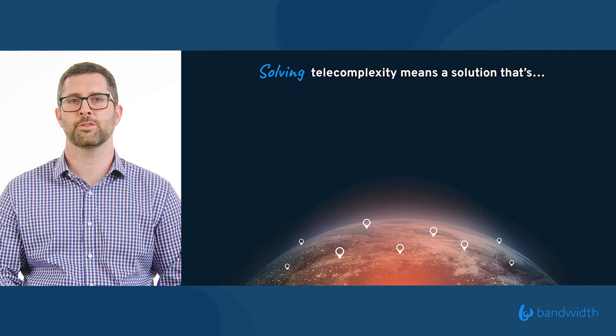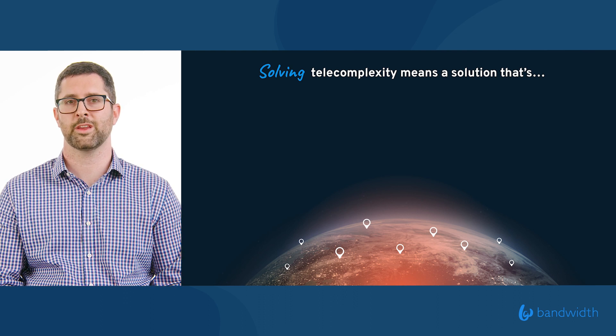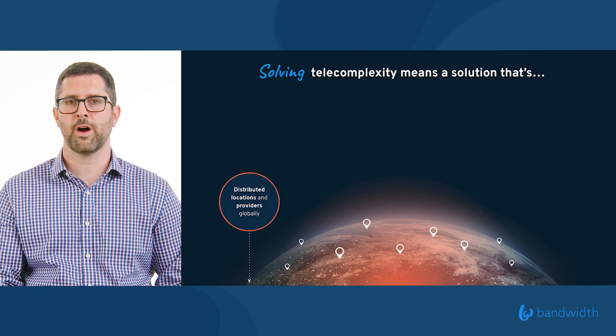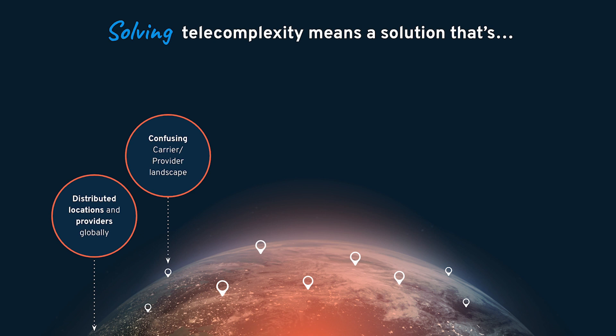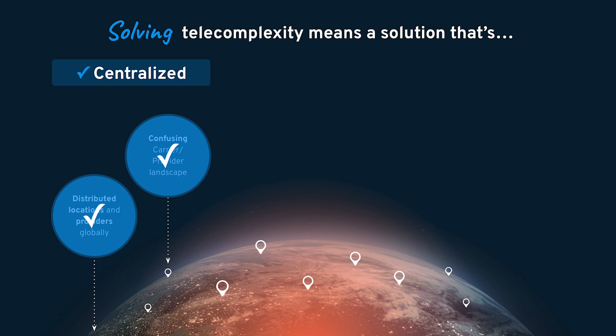Solving telecomplexity means finding a solution that helps you overcome the challenges of dealing with distributed locations, different providers, and a confusing carrier and provider landscape across the world. For example, if you have a contact center with multiple locations — one in the UK, one in the US, one somewhere else — you're likely dealing with different carrier vendors, different SLAs, different contracts, different terms, and different support. It can get really complex fast. We'd recommend looking for a solution that centralizes those carriers into a single carrier relationship.